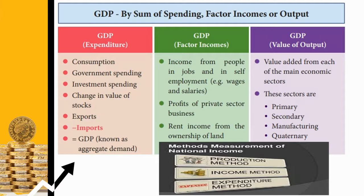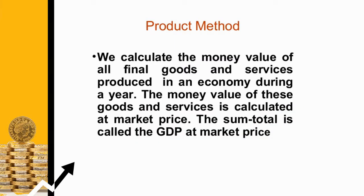These three methods are used to measure national income. The first one is the product method, also called the production method or value added method. The second one is the income method or factor earning method. The third one is the expenditure method. Let's learn them one by one.